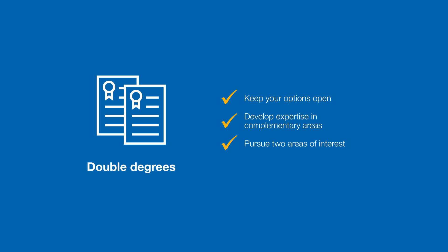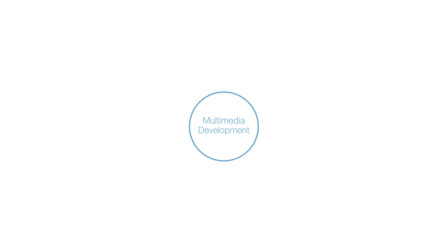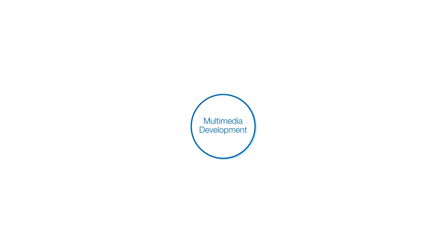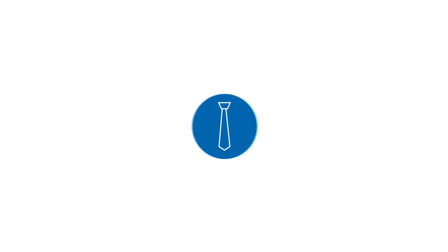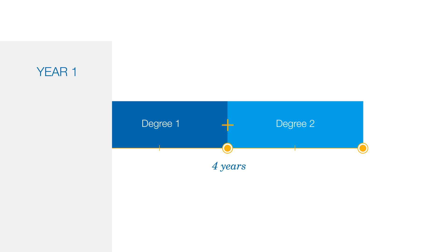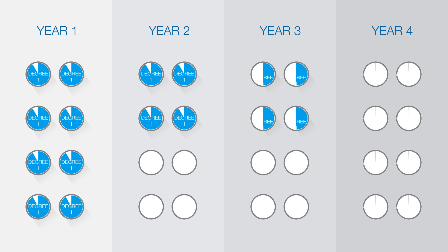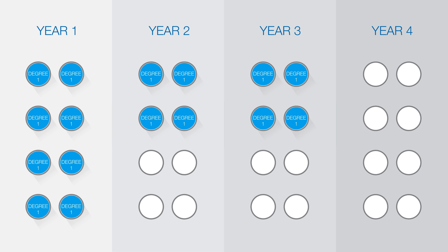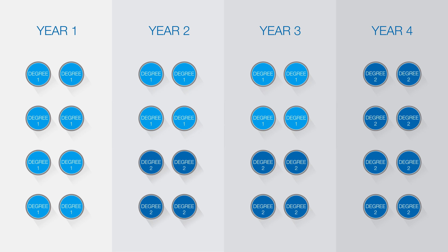For example, you might want to major in multimedia development but also want to study management with the view to running your own multimedia design business. A double degree course takes two years less to complete than if you studied towards the two degrees separately. This is made possible by required units in one course counting as electives in the other course.